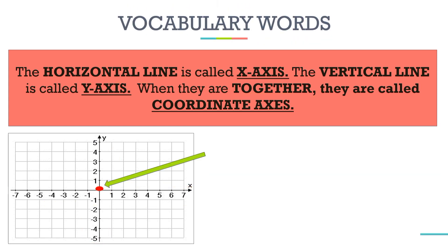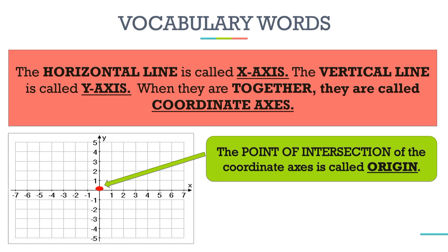The point of intersection of the coordinate axis — where the x-axis and y-axis meet — is what we call the origin. This is where the zero parts of the x-axis and y-axis coincide. The point of intersection is called the origin.